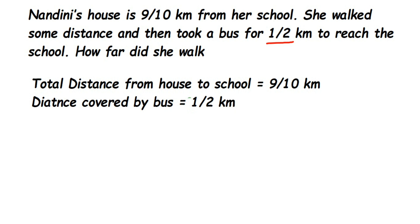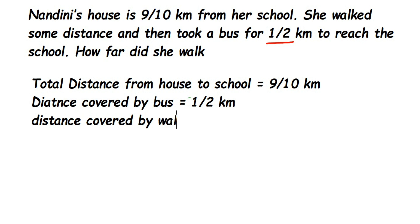Distance covered by walk = total distance minus distance covered by bus = 9/10 minus 1/2. Now this is a subtraction of two fractions, but the denominators are not the same. We've learned that when subtracting two fractions, the denominators have to be the same, so we have to take the LCM of the denominators.